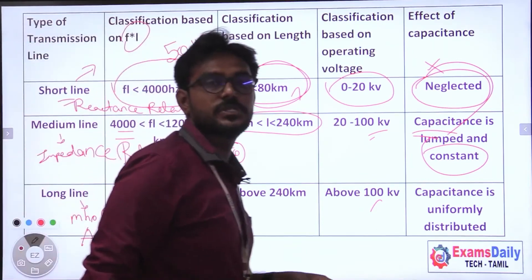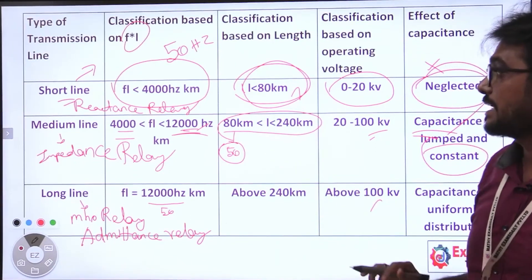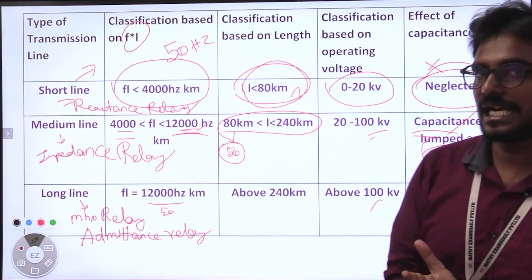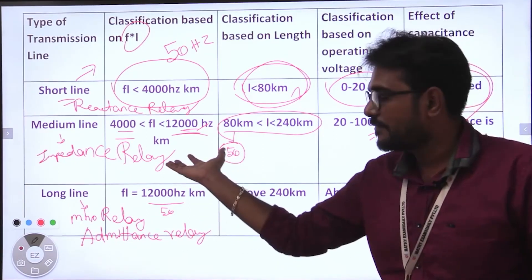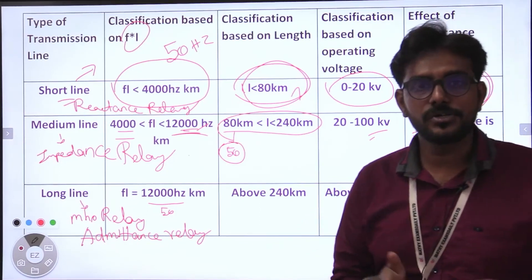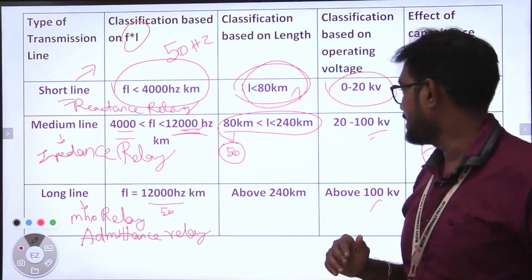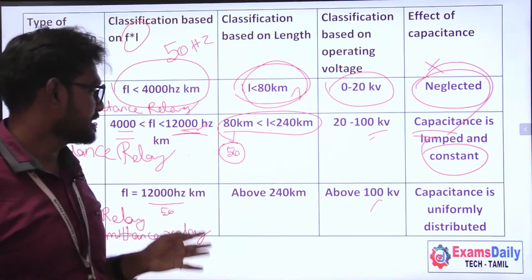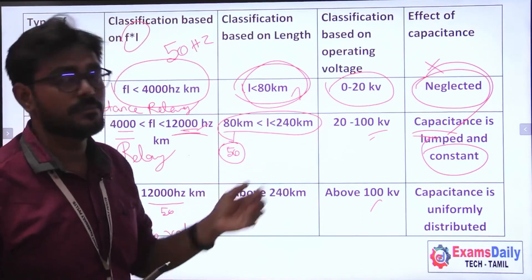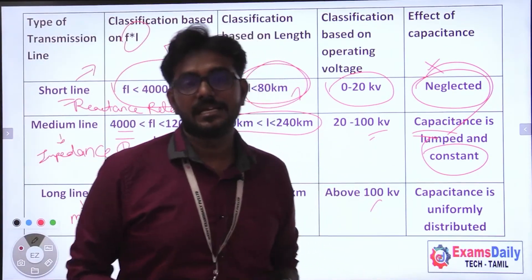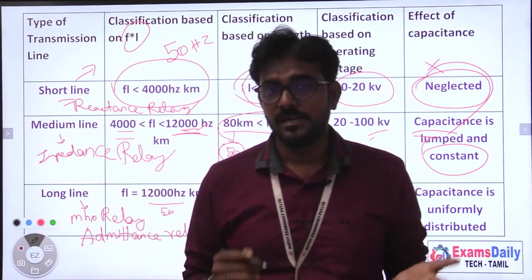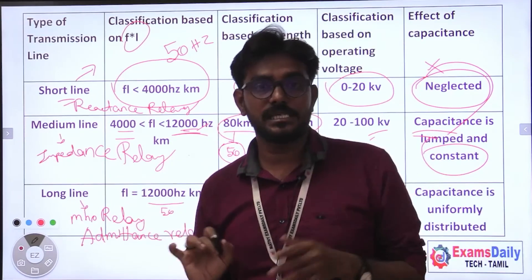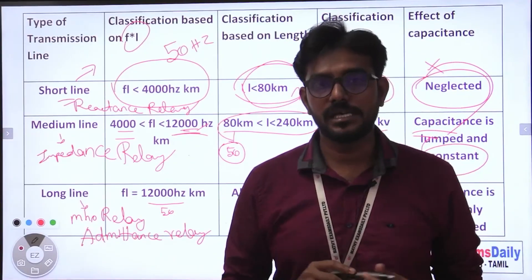You can ask MCQ questions from each of the 12 lines. To recap: short line — less than 4000 frequency-length, less than 80 km, 0 to 20 kV, capacitance neglected. Medium line — 4000 to 12,000, 80 km to 240 km, 20 to 200 kV, capacitance lumped. Long line — above 12,000, above 240 km, above 100 kV, capacitance uniformly distributed.